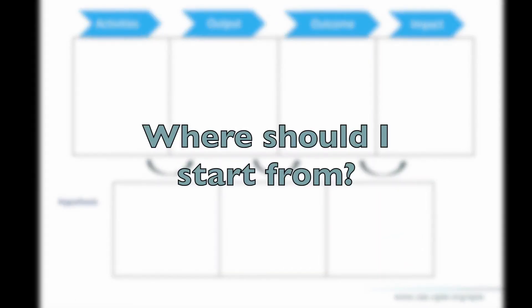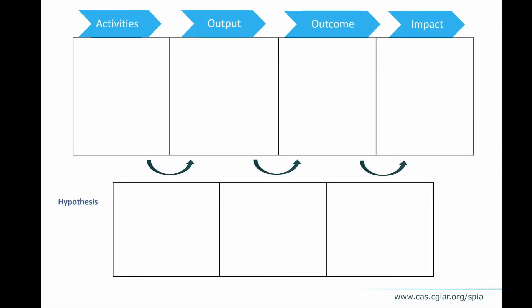A practical question is: where should I start when filling in the theory of change table? Remember, theory of change is not just a table — it's the whole thinking about how your activities will result in the impact you hope to reach. Practically, it works well to start by listing the activities the project includes, since these are usually well defined. Then think about the final impacts the project aims to reach, and work through the outputs and outcomes step by step. At the end, think about the hypotheses at every stage: activities to output, output to outcome, and outcome to impact.